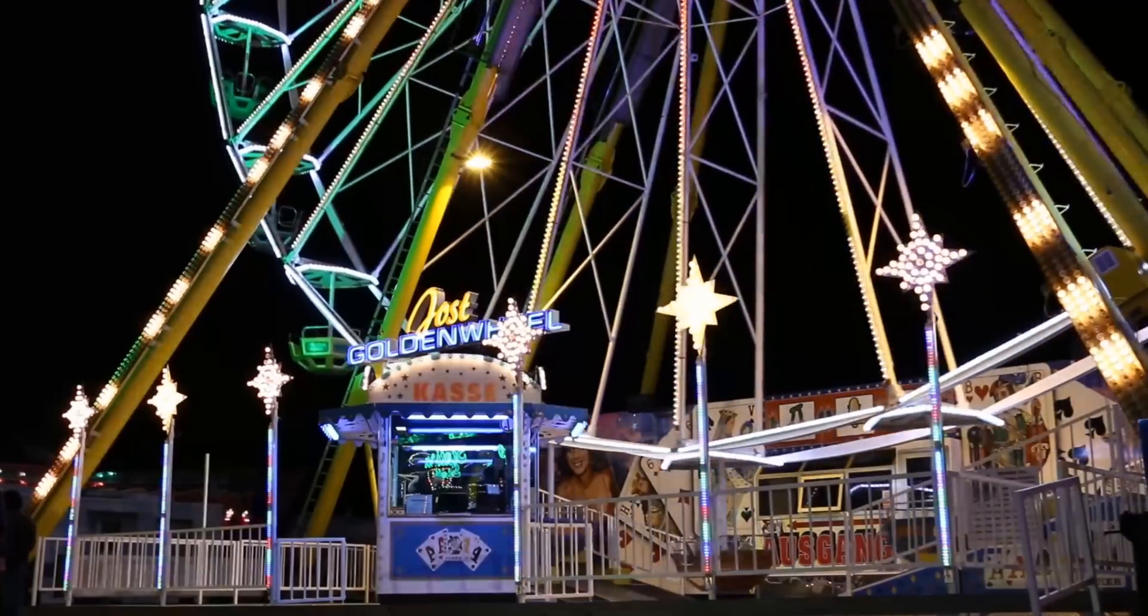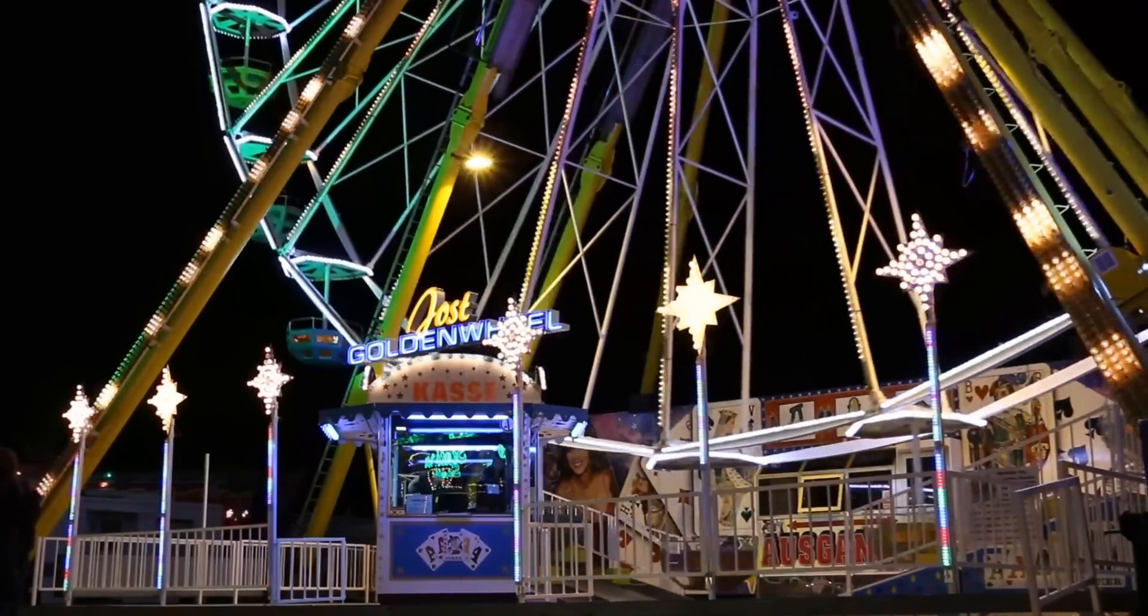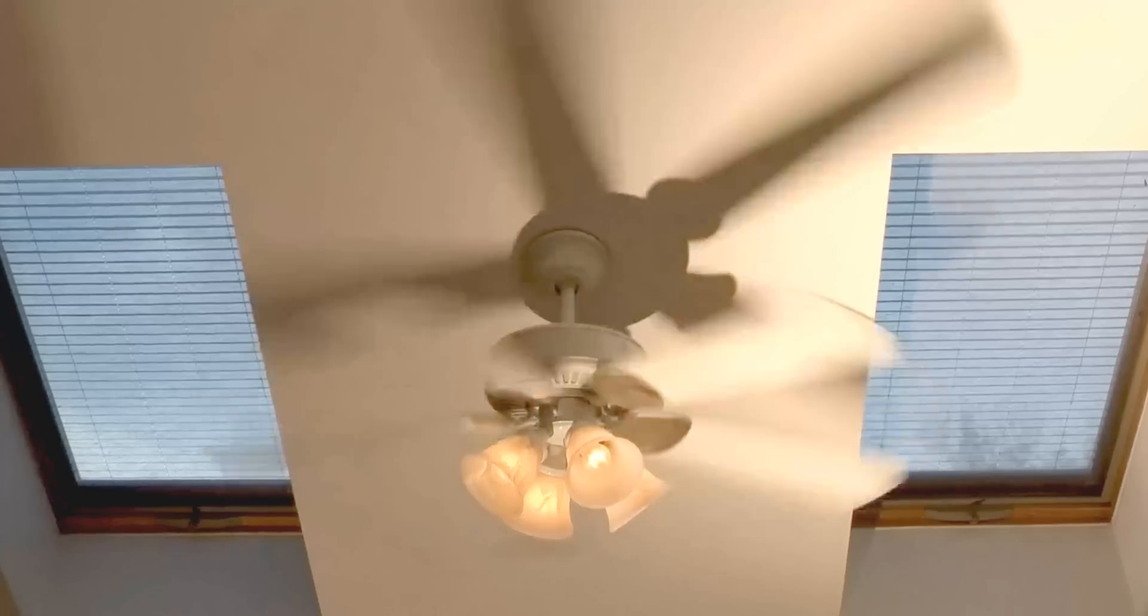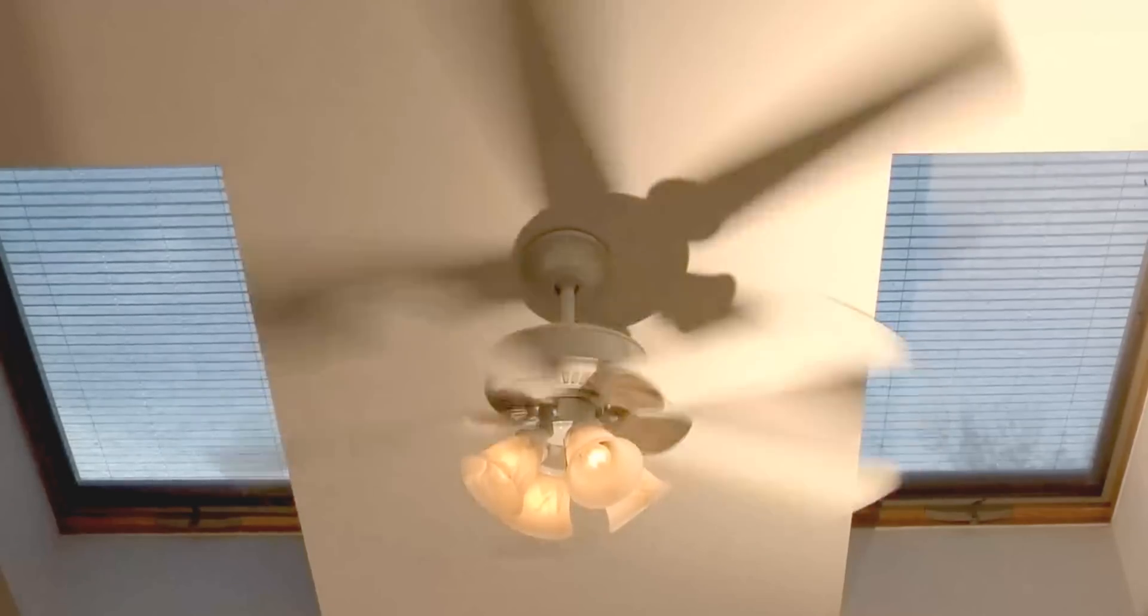Ferris wheels rotate about relatively slowly, making one revolution every 600 seconds or so. A ceiling fan, on the other hand, typically rotates twice around every second.